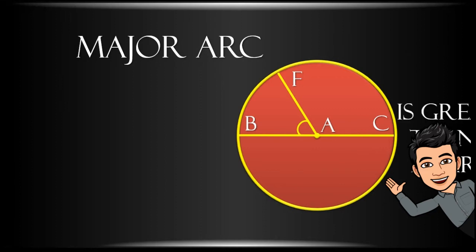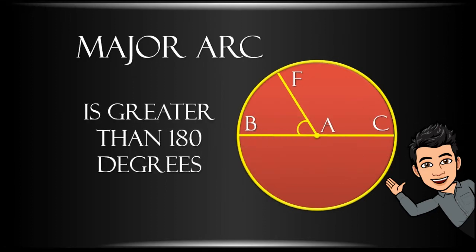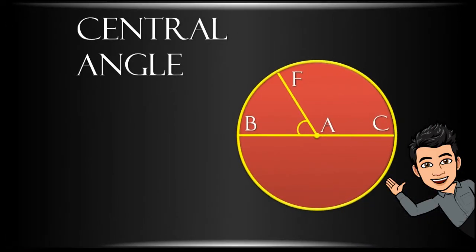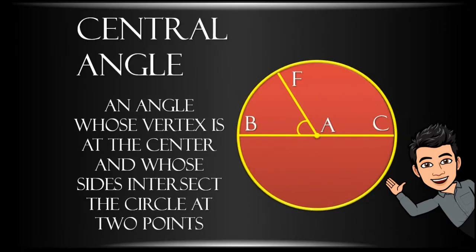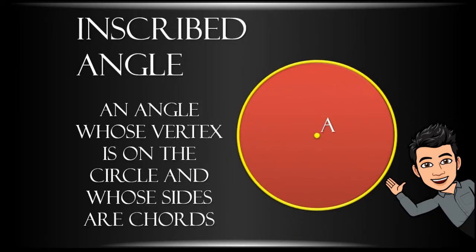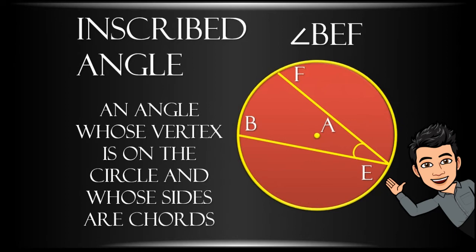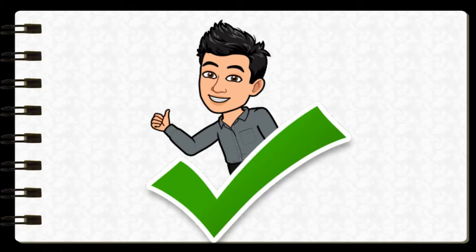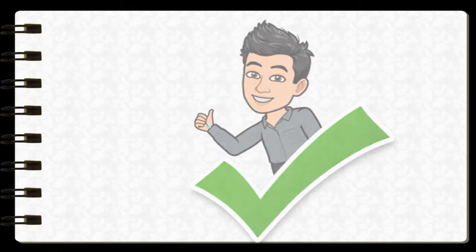A major arc is greater than 180 degrees. Arc CBF is a major arc. Central angle - an angle whose vertex is at the center and whose sides are radii. Example: angle BF. Those are some of the circle parts. Have you memorized them?